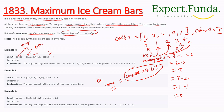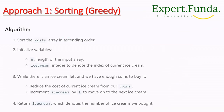In example two, coins is only 5 and there is no available ice cream to buy because all ice cream prices exceed the given coins. Similarly for example three with 20 coins, you can buy as many as possible. You can try that one on your own.